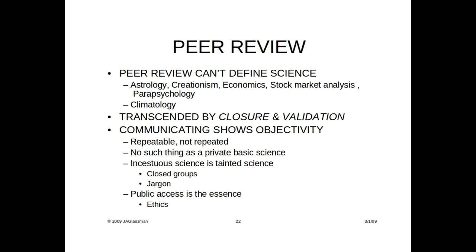On the other hand, there are groups that have peer review — I've listed some on the screen starting with astrology. You can pick up an astrology journal and it appears to have peer review; they go through all the motions of peer review, and yet it's certainly not a science. Creationism, economics, stock market analysis, parapsychology — these things have journals, peers, and reviews, and that doesn't elevate them to science at all. So there's science that doesn't require peer review and there's peer review that's not science. Peer review is important especially in academic science as quality control, but when you've got a model you can't tell whether it's been through peer review or not — it's not attached to the model itself. Like gravity: does it work? That's what counts.